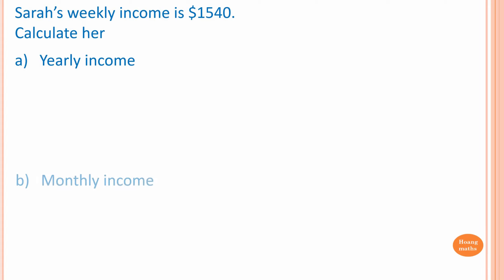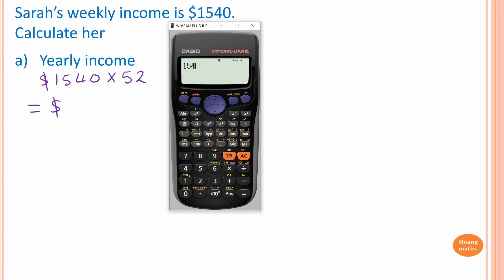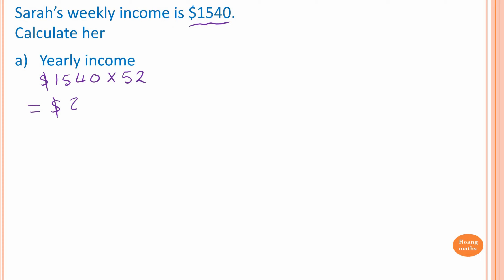Please stop the video and try this one yourself. So we know her income is $1,540. Work out yearly income. So we know that one year is 52 weeks, so we just go $1,540 times 52. So that will give me $1,540 times 52, so $80,080.